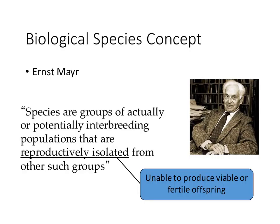Here's Ernst Mayr's actual written definition of the biological species concept: species are groups of actually or potentially interbreeding populations that are reproductively isolated from other such groups. One of the most famous definitions in evolution. Reproductive isolation means any groups are reproductively isolated when a cross between individuals of two groups produces inviable—that is, dead—or infertile, sterile offspring.